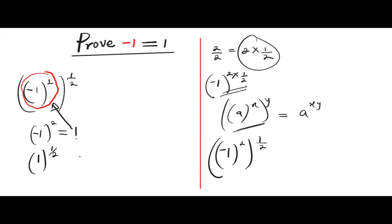And from the law of indices also, a raised to the power of half equals square root of a. So if you follow that principle here, we're going to have 1 raised to the power of half will equal the root of 1. And the root of 1 equals 1. So right now, we have been able to prove that negative 1 is actually equal to 1.